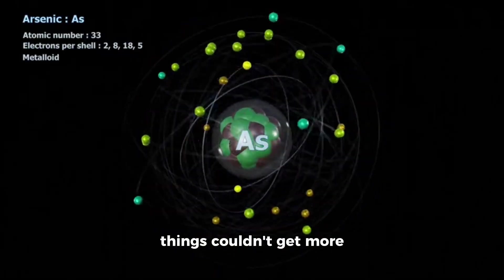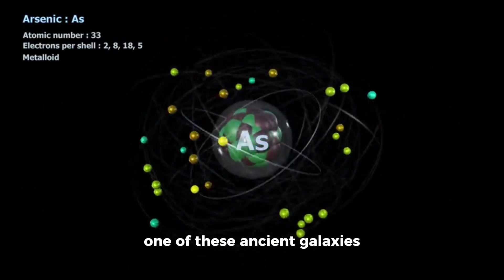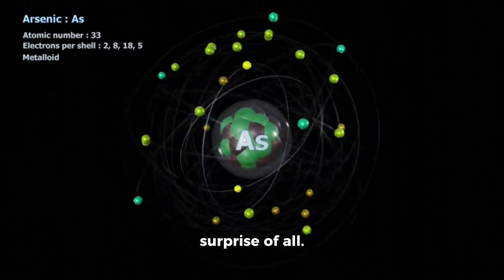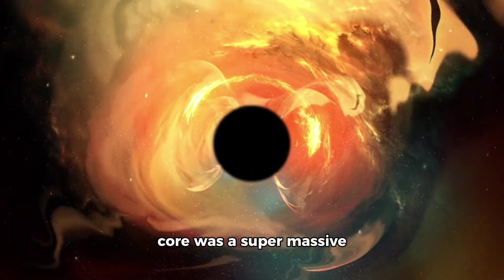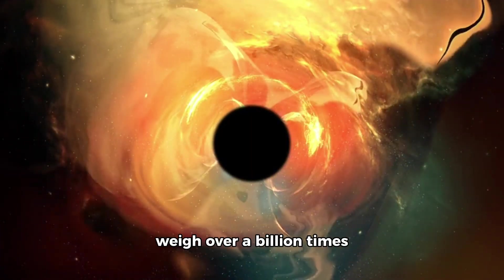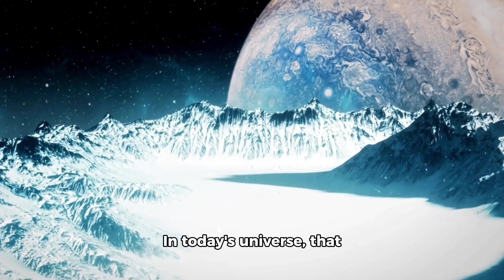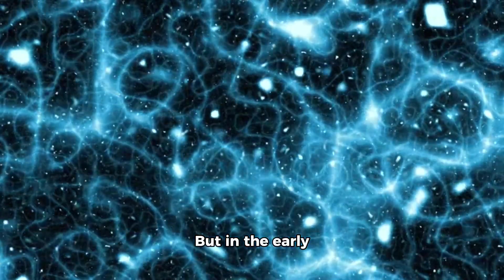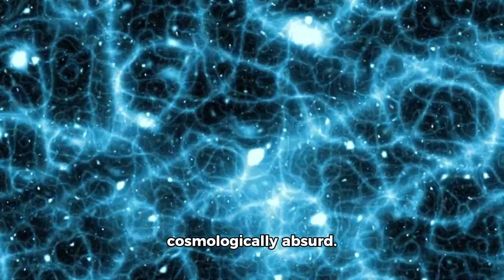Just when scientists thought things couldn't get more confounding, the center of one of these ancient galaxies delivered the most outrageous surprise of all. Nestled deep within its core was a supermassive black hole estimated to weigh over a billion times the mass of our sun. In today's universe, that would be incredible. But in the early universe, that's not just unlikely, it's cosmologically absurd.